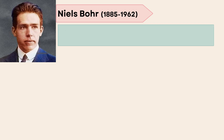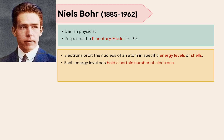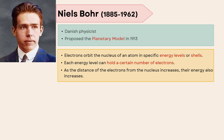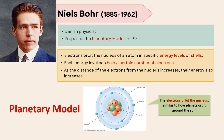Niels Bohr was a Danish physicist who proposed the planetary model in 1913. According to his atomic theory, electrons orbit the nucleus of an atom in specific energy levels or shells. Each energy level can hold a certain number of electrons. As the distance of the electrons from the nucleus increases, their energy also increases.